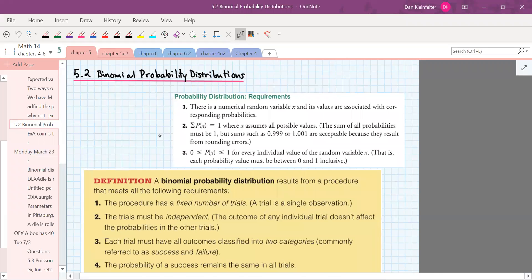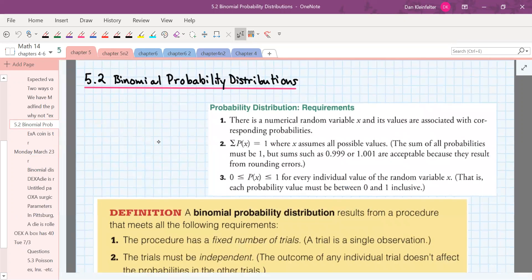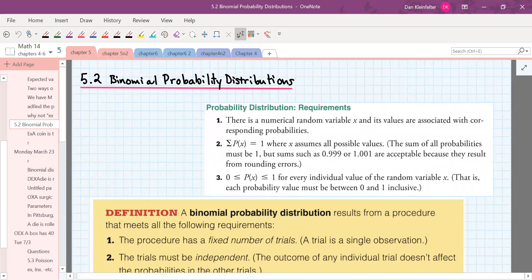We had already talked about what a probability distribution is, and there were three requirements for probability distribution. We had a numerical random variable x values associated with corresponding probabilities.